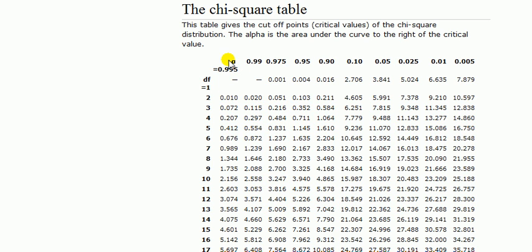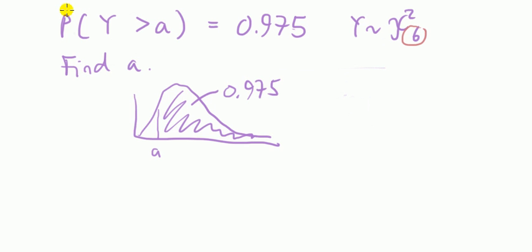So the area to the right is 0.975. The alpha denotes that. Well, it's right there. The degree of freedom is 6, so I slide down there until I hit row of 6. 1.237 is the answer. Done.